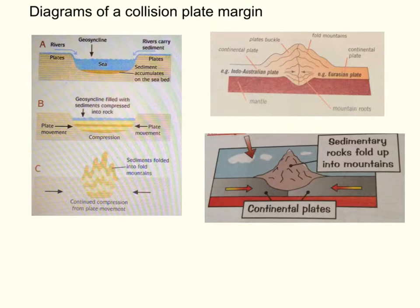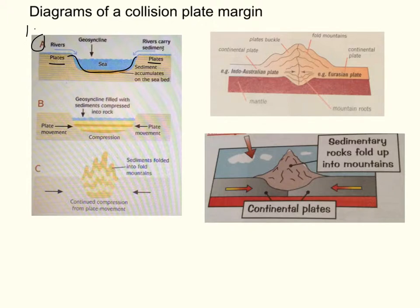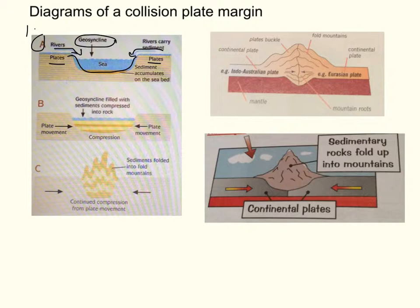Here we have a sequence of diagrams to summarise what happens at a collision plate margin and how this leads to the formation of fold mountains. In diagram A you can see two tectonic plates — both continental — with an area of sea in between them. Rivers carry material from the land and deposit it in the sea. This area where the material is deposited is called a geosyncline — a depression in the sea where material is deposited — causing sediment to build up on the seabed in layers.